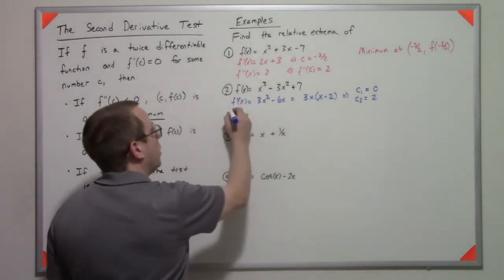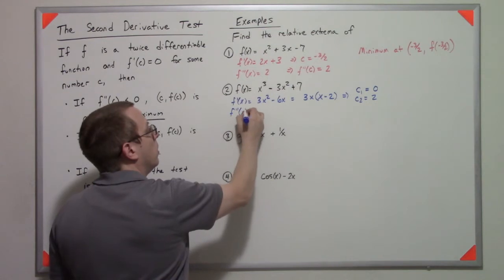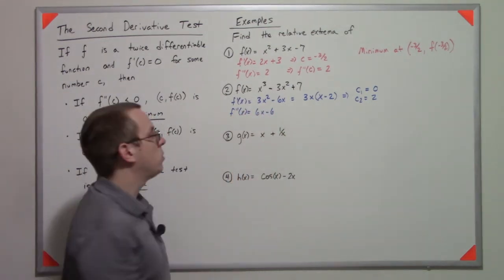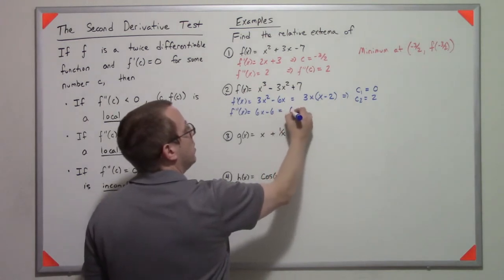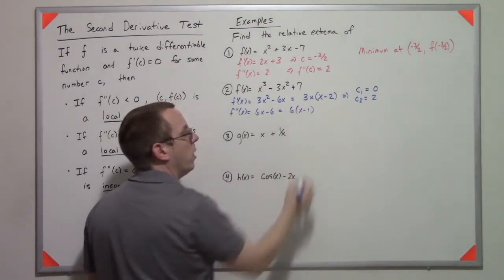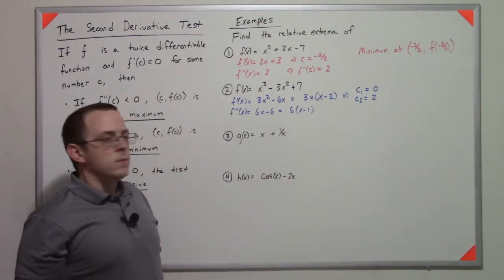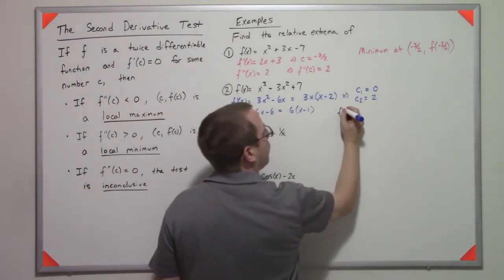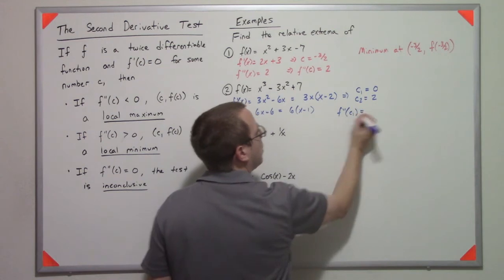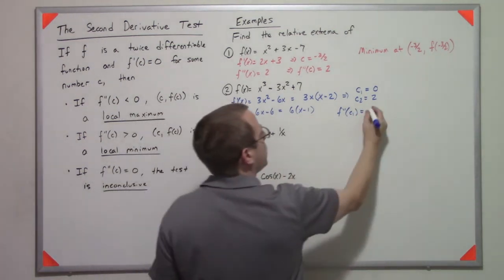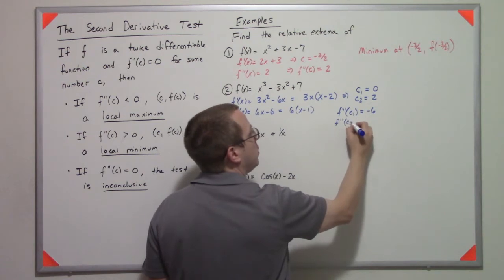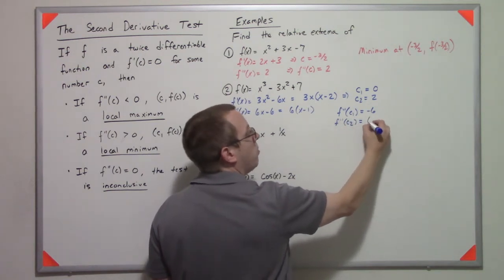So then what I need to do is take the second derivative, 6x - 6, which I'm going to rewrite as 6(x - 1). So then what I do is I plug in f''(c₁), well that's going to get me negative 6. f''(c₂) is going to get me positive 6.